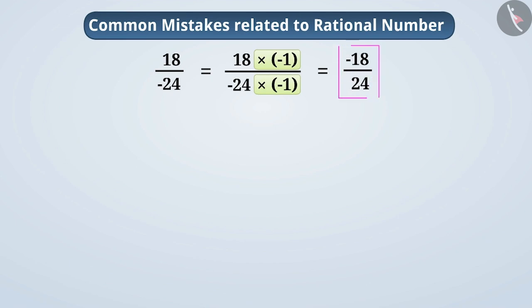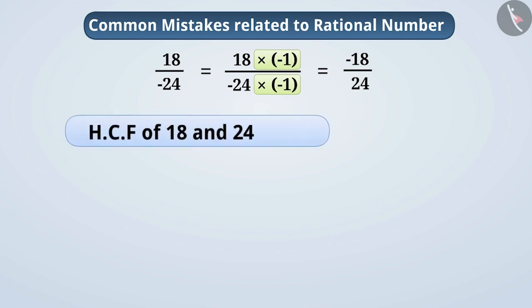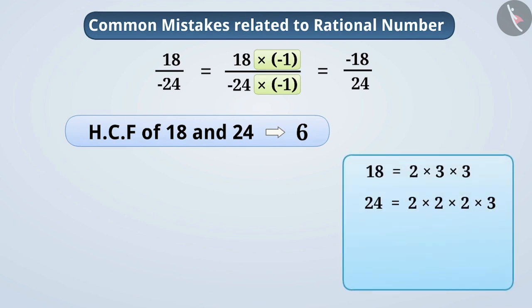Some children, while obtaining the standard form of 18 by 24, instead of dividing the numerator 18 and denominator 24 with their HCF 6, they divide the numerator and denominator by one of their common factors such as 3. This gives them a rational number of minus 6 by 8. Often children consider this as the standard form.